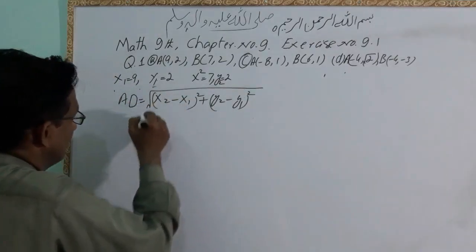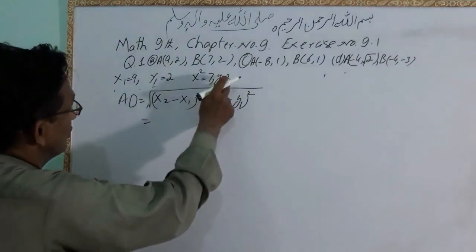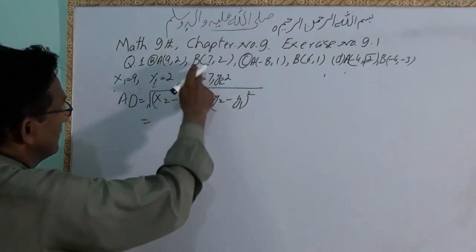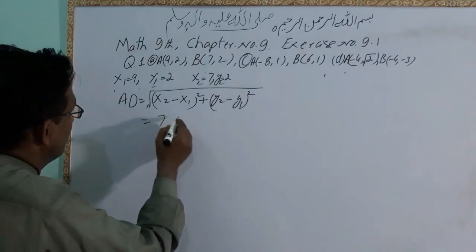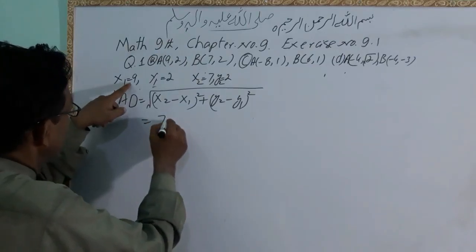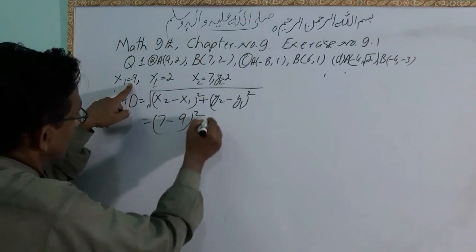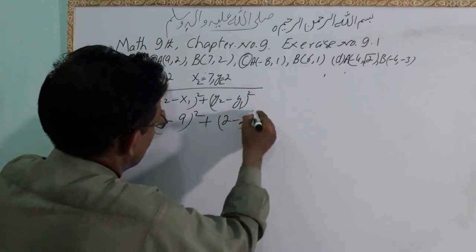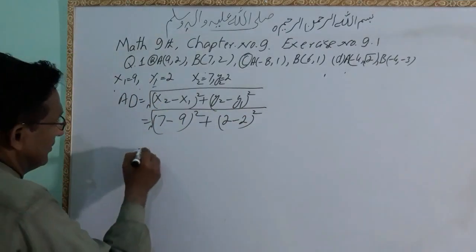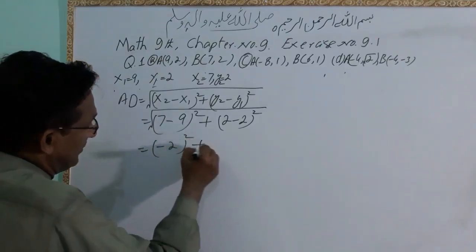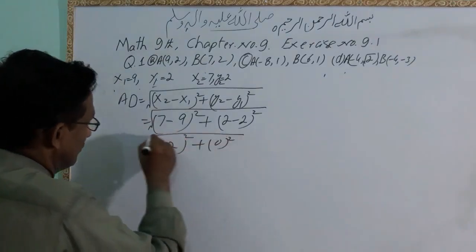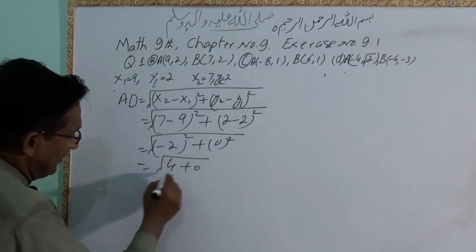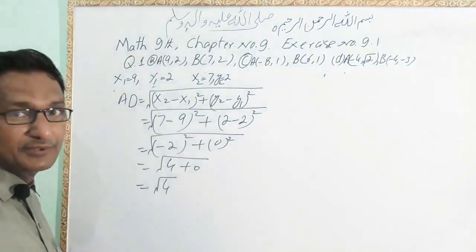We have the points (2, 7) and (9, 2). So: 7 minus 9 plus 2 minus minus 2, square root. That gives minus 2 squared plus 0 squared. I will just add 4 plus 0 equals 4. When you take the square root of 4...